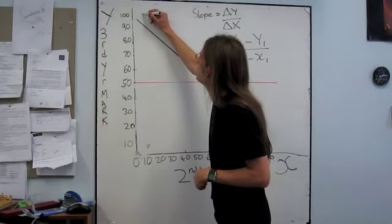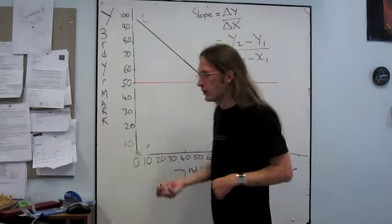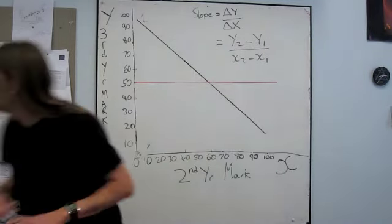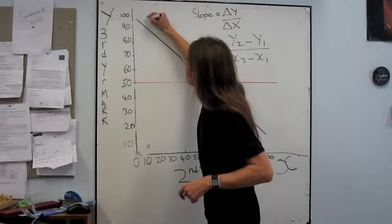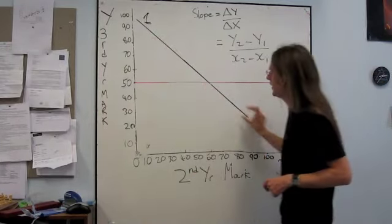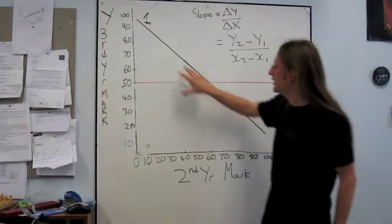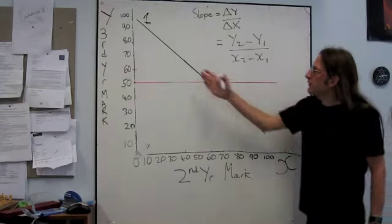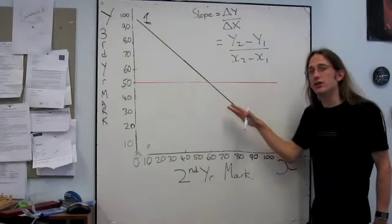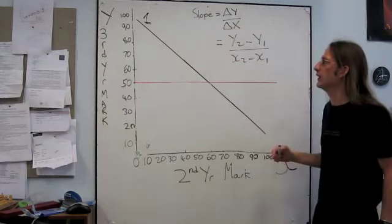So if we just take this function here, I'll just find a pen that works. If we take this function here, you can see that as x increases, y decreases. But this gradient, this line, this function, is still going to have some kind of slope value.